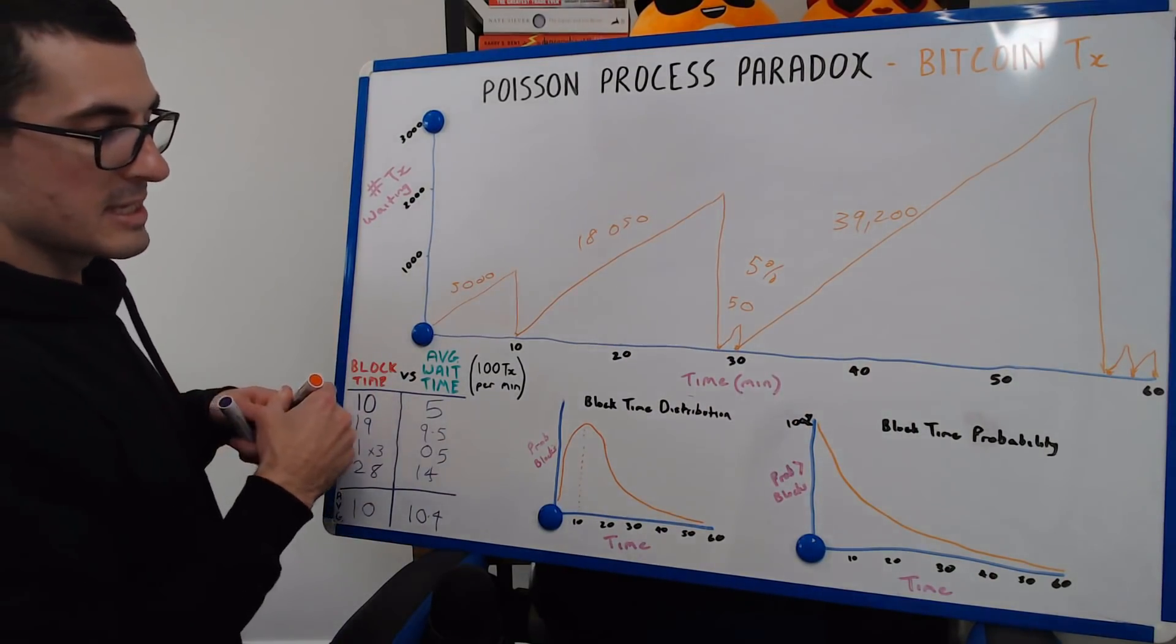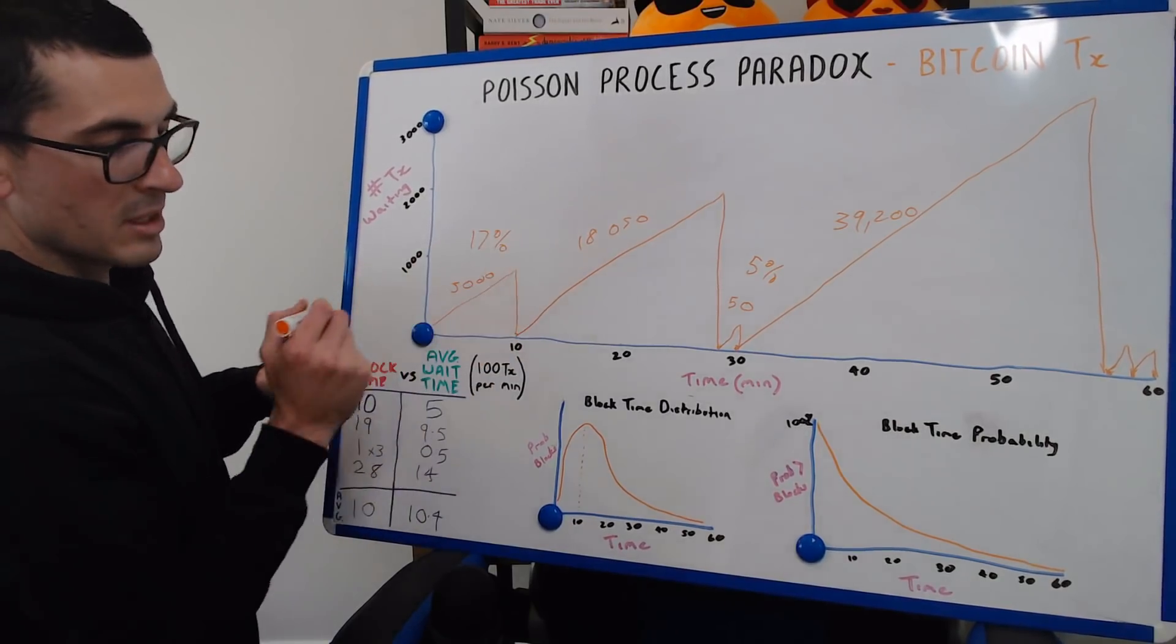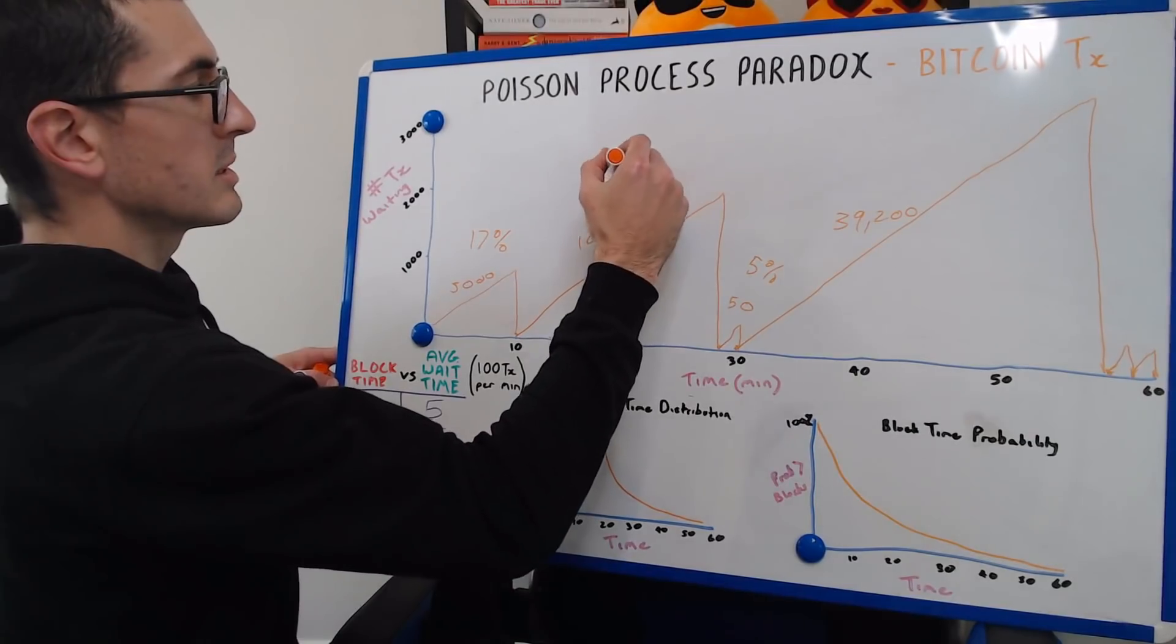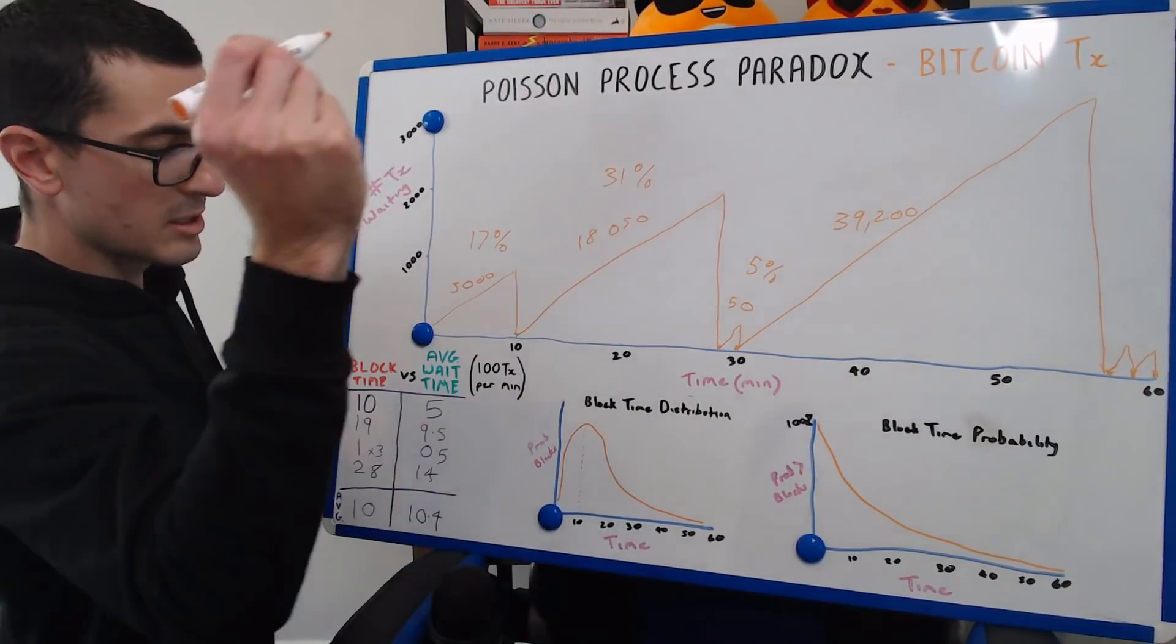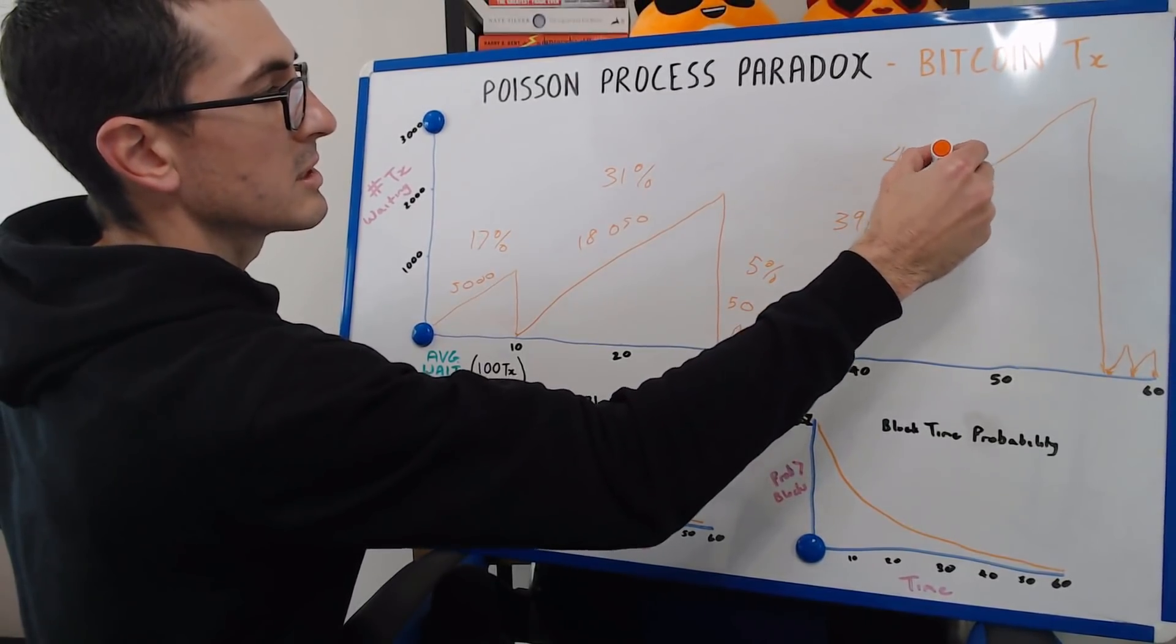Then we have 17% of people in the 10-minute block, 31% of people in the 19-minute block, and 47% of people in the 28-minute block.